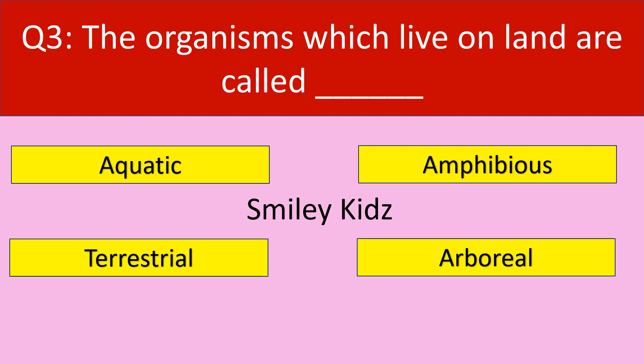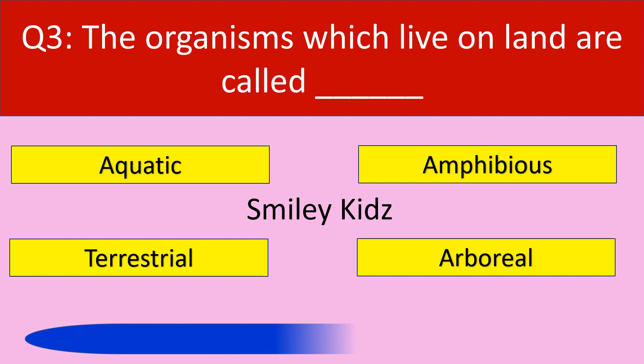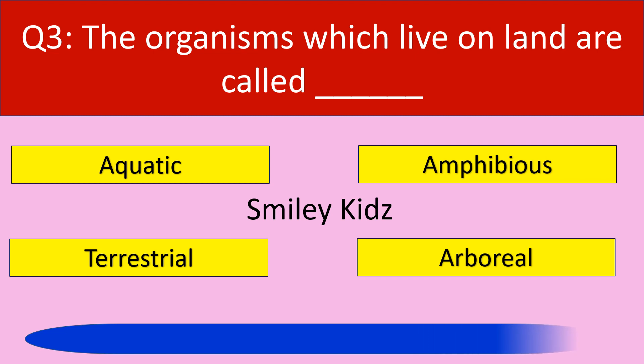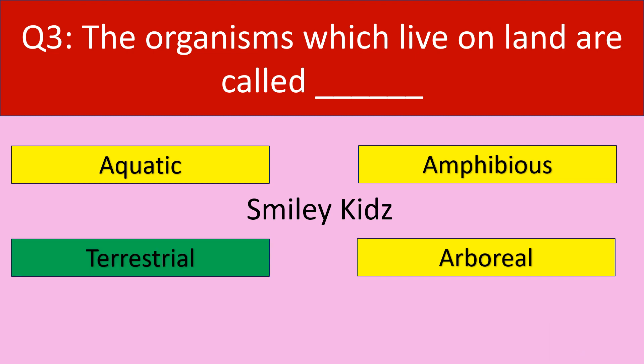Question number 3. The organisms which live on land are called. Options are: aquatic, amphibious, terrestrial, arboreal. The correct answer is terrestrial. The organisms which live on land are called terrestrial animals.